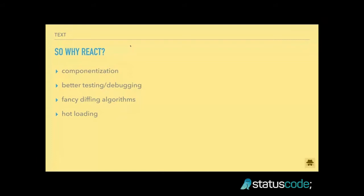There are basically four aspects of why React is great. The first is componentization — turning your code into discrete components where each one does one thing, and you can focus on that, which in turn makes it easier to test. Because you have componentization, you get easier testing and debugging because you can focus on specific parts of the code base.